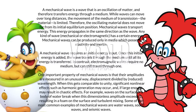Any kind of wave — mechanical or electromagnetic — has a certain energy. Mechanical waves can be produced only in media which possess elasticity and inertia. A mechanical wave requires an initial energy input. Once this initial energy is added, the wave travels through the medium until all its energy is transferred. In contrast, electromagnetic waves require no medium, but can still travel through one. One important property of mechanical waves is that their amplitudes are measured by displacement divided by reduced wavelength. When this gets comparable to unity, significant non-linear effects such as harmonic generation may occur. Some of the most common examples of mechanical waves are water waves, sound waves, and seismic waves.